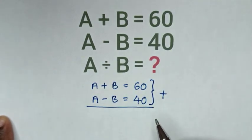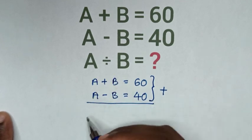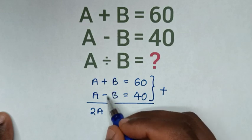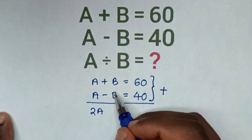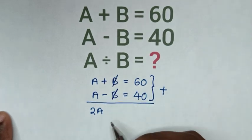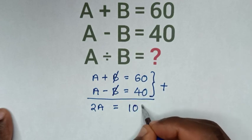On the left side, when you add A plus A, that's 2A. Then B plus negative B equals B minus B, which is 0, so these cancel. On the right, 60 plus 40 equals 100. So 2A equals 100.